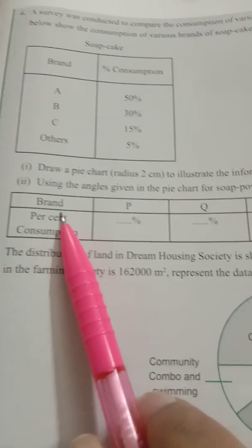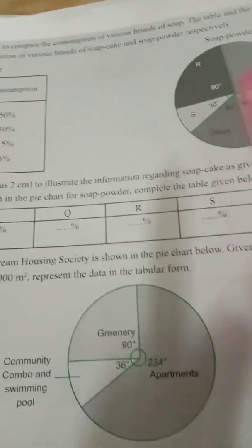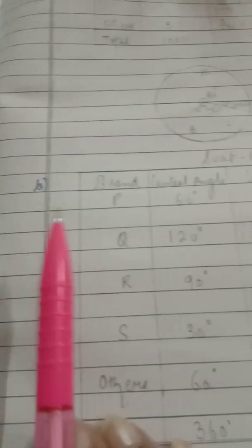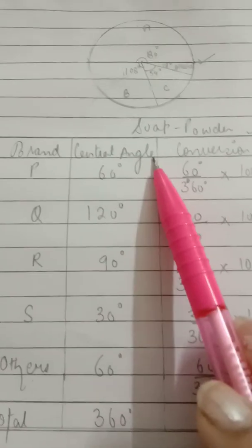Let's see the question. Using the angles of the pie graph given for soap powder, you have to complete the following table. These are the brands P, Q, R, S, and others. The percentage consumption: the degree is already given and we have to find the percentage consumption. For this we don't need the pie graph, we only need the table.